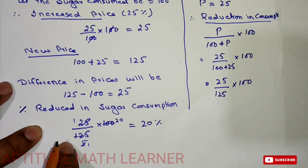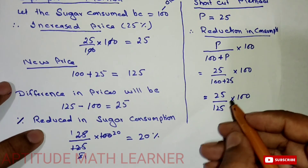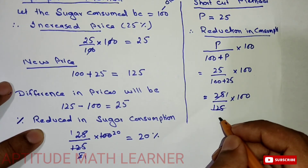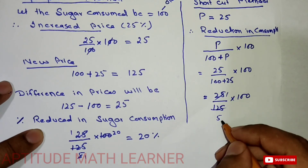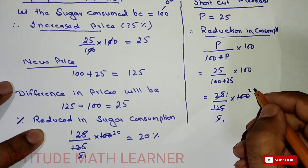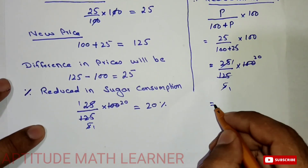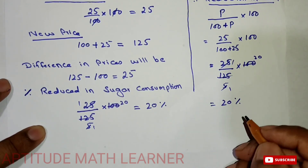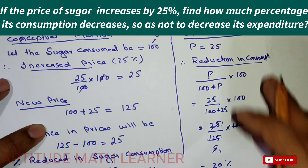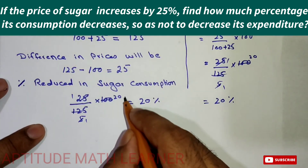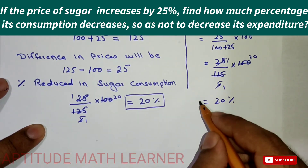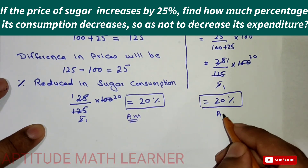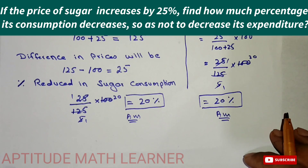This portion — 25 over 125 times 100 — is the same calculation we found in the conceptual method. Cancelling out: 25 fives are 125, and 5 twenties are 100, so we again get 20 percent. The reduction in consumption of sugar is 20 percent. Both methods give the same answer. Thank you very much.